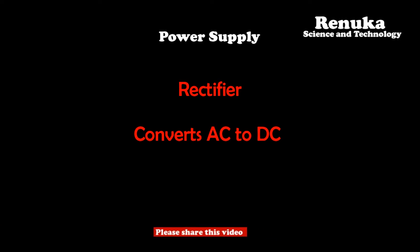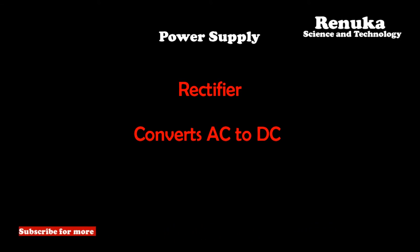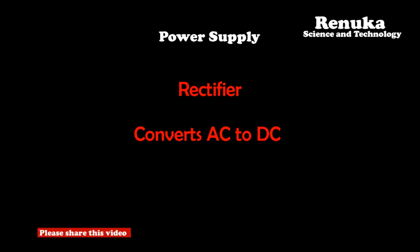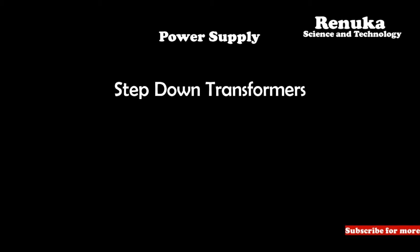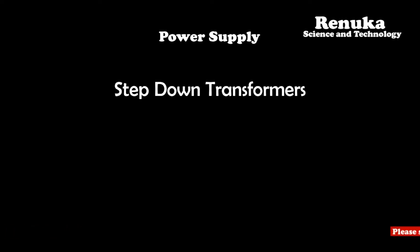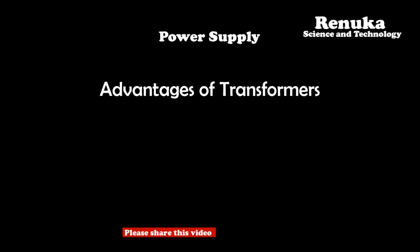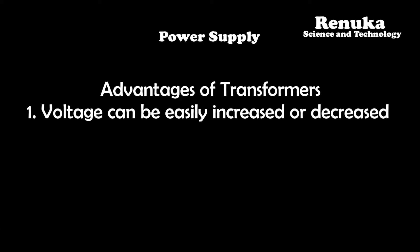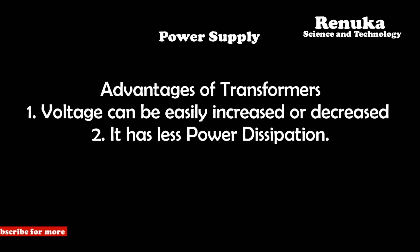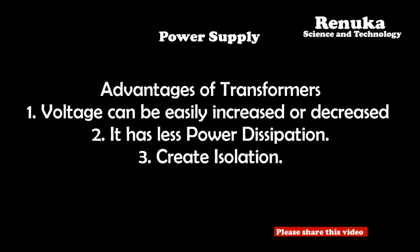The power supply distributed by power companies is AC, but all electronic equipment works only on DC power. Therefore, it is convenient to convert AC into DC using a rectifier. Since high voltage AC is not required by all electronic equipment, the voltage should be lowered using a step-down transformer. The transformer offers advantages: it can step up or step down AC input voltage, saves power, and isolates the mains AC power from the load circuit.